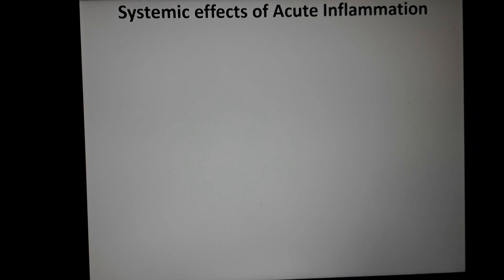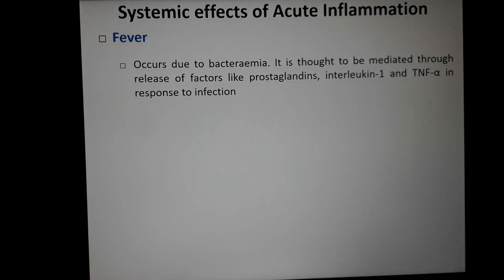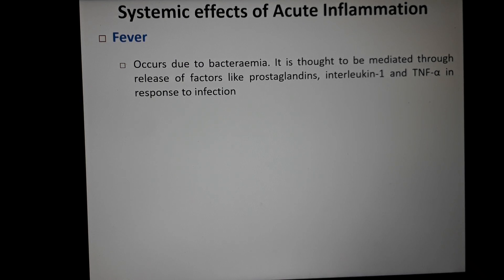The first systemic effect is fever. This is the most common systemic effect and it occurs due to bacteremia — a large number of bacteria in the body. Fever is mediated through chemical mediators of inflammation, including prostaglandins and cytokines like interleukin-1 and tumor necrosis factor alpha, which are released in response to infection.